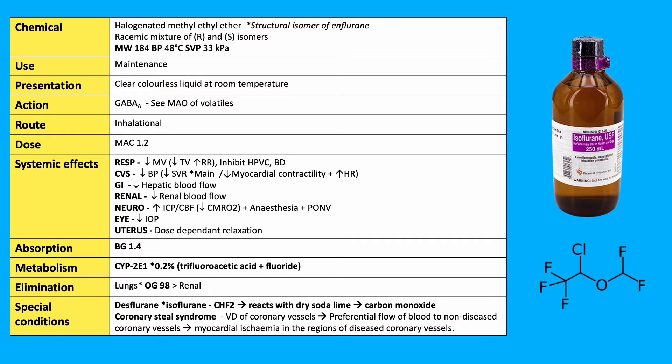GI and renal effects include a reduction in hepatic and renal blood flow. Neurological effects include an increase in intracranial pressure and cerebral blood flow, with a reduction in cerebral metabolic rate of oxygen (CMR-O2). It maintains anesthesia and can cause post-operative nausea and vomiting.